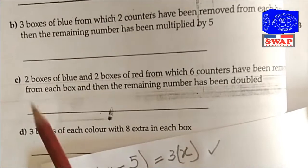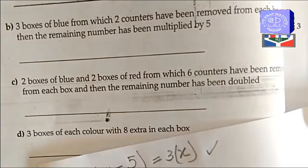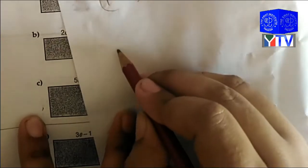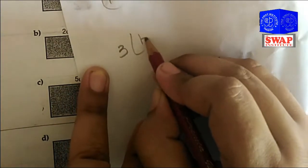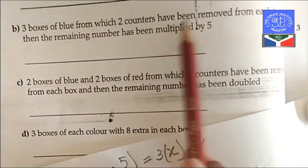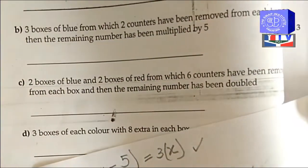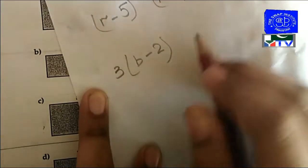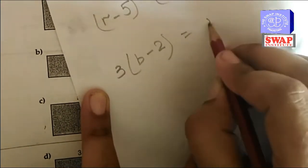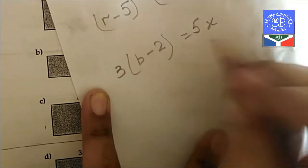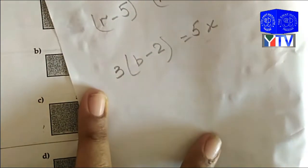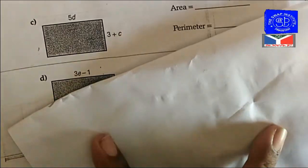Let's have another example: 3 boxes of blue from which 2 counters have been removed, so we write (b minus 2), and the remaining will be multiplied by x. So it will be 5x. You can write it in this way also. You can see it's really very easy to do.